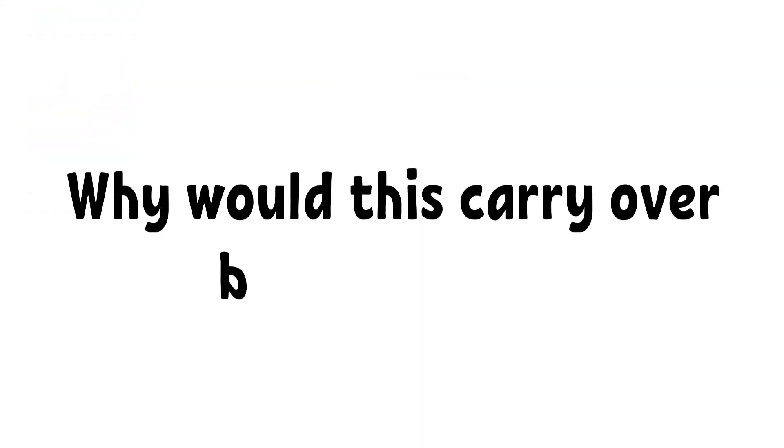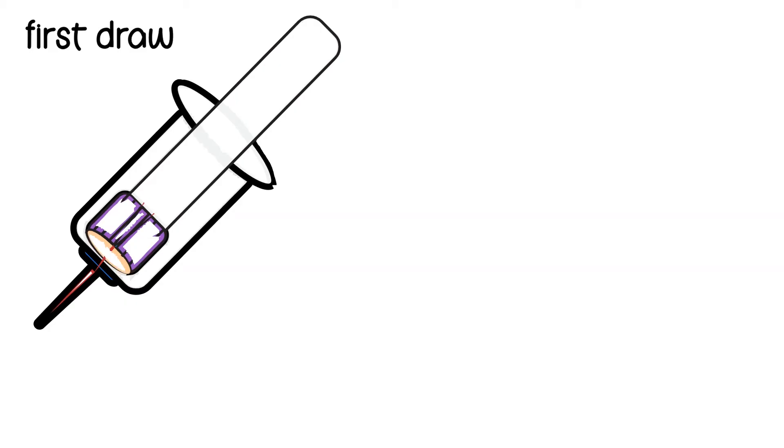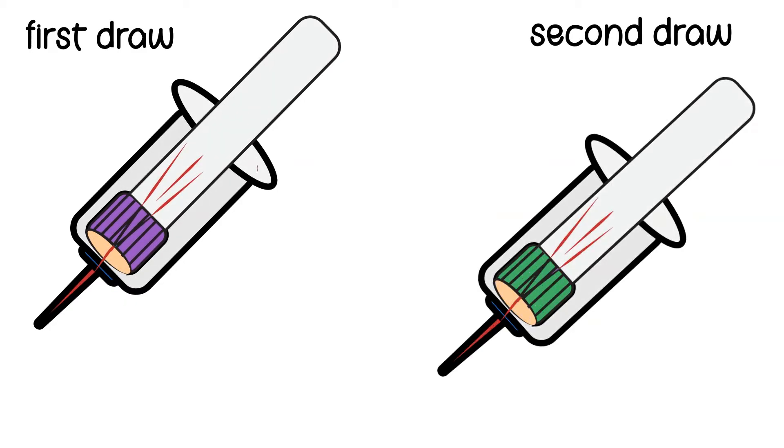Why would this carryover be a problem? If you draw purple top tubes before your green top tubes, the carryover from purple tubes can cause falsely high potassiums.